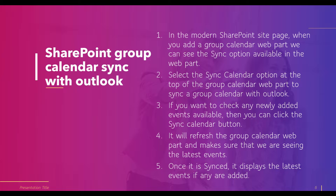Now we will see how to sync the calendar with Outlook. When you add the group calendar web part, the sync option is presented in the web part. When you select the sync option at the top of the group calendar web part, the calendar will automatically sync with Outlook so that newly added or upcoming events from Outlook will be displayed in the group calendar web part. To refresh the group calendar web part we use the sync option, so we can view the latest events.